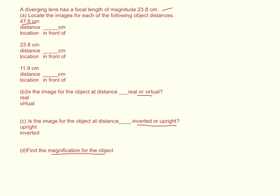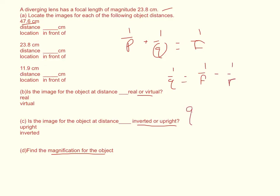We need to find the image distance Q, so we use the thin lens equation: 1 over P plus 1 over Q equals 1 over F. We solve for Q by isolating it: 1 over Q equals 1 over F minus 1 over P. Taking the common denominator and inverting gives Q equals P times F divided by P minus F.